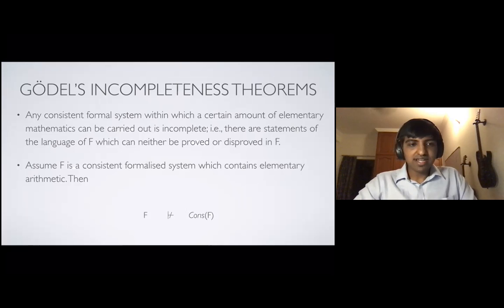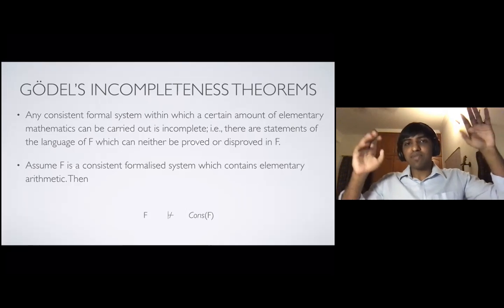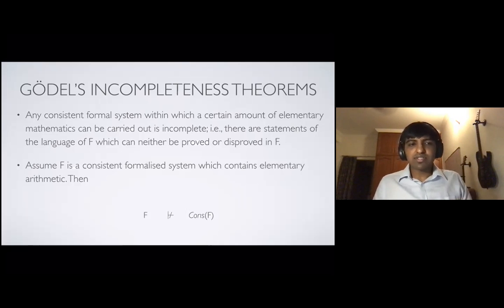Soon after, he gave the second incompleteness theorem, which says that, assume F is a consistent formalized system which contains elementary arithmetic. Then F cannot prove the consistency of F. So if you're working in an axiom set, say A, and from axiom set A, you derive some conclusions, and you like the conclusions, you're happy with them. But then you cannot be very sure about them because you cannot be sure about your system itself. You cannot show from your system that your system is consistent. You might have contradictions. You cannot give a proof that there are no contradictions in my system, in the same system. And that has happened in the past. For example, Church and Rosser came out with their own mathematical systems and proved beautiful results in those systems. But then soon after, those systems ran into contradictions.